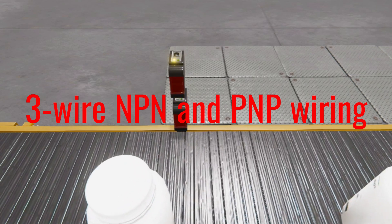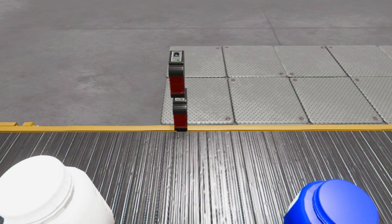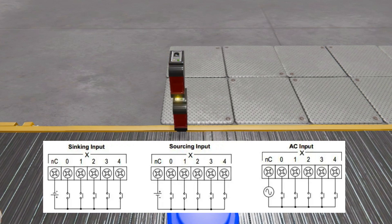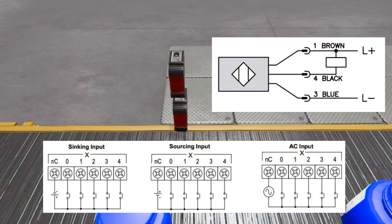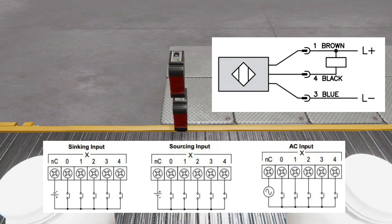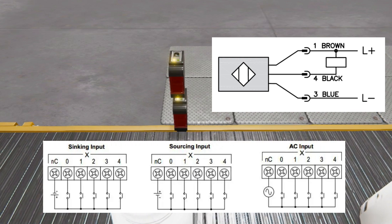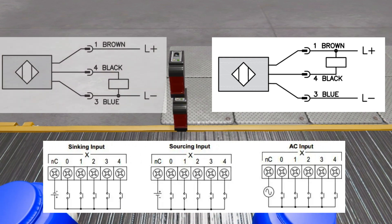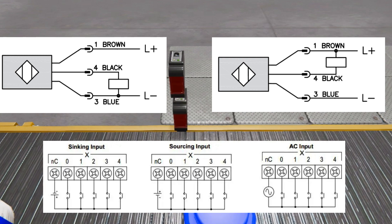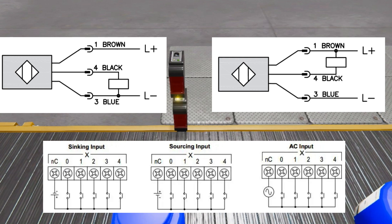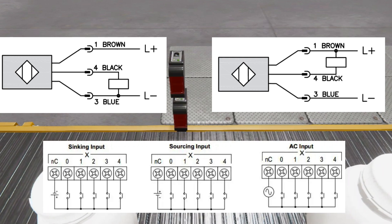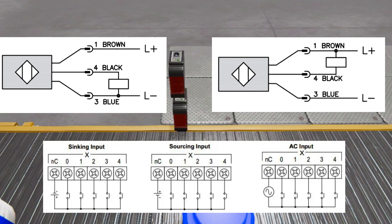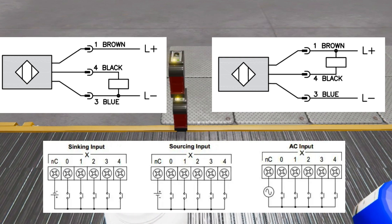Three-wire proximity switches can be confusing to wire. The choice between NPN and PNP wiring depends on the requirements of your specific application. In a three-wire NPN configuration, the proximity switch is connected to a positive power supply and the output is connected to the control device. When an object is detected, the switch's output is pulled to ground, completing the circuit and signaling the control device. In a three-wire PNP configuration, the proximity switch is connected to a negative power supply and the output to the control device. When an object is detected, the switch's output is pulled to the positive supply voltage, completing the circuit.